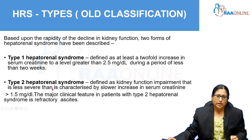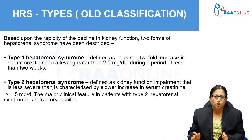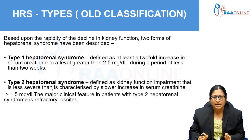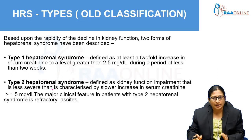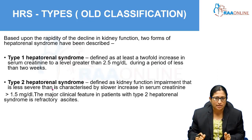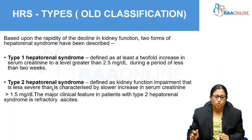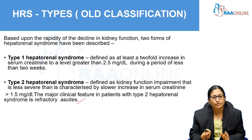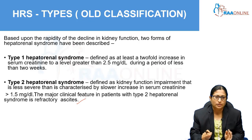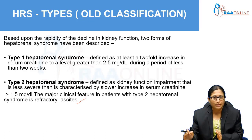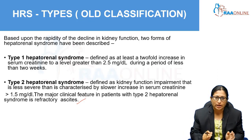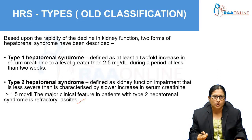Type 2 Hepatorenal Syndrome involves a slow decline of renal function over a prolonged period of time. It is defined as kidney function impairment which is less severe, characterized by a slower increase in serum creatinine of more than 1.5 mg/dL, and it is usually associated in patients with refractory ascites. Type 2 HRS is less severe with a slow fall in kidney function.